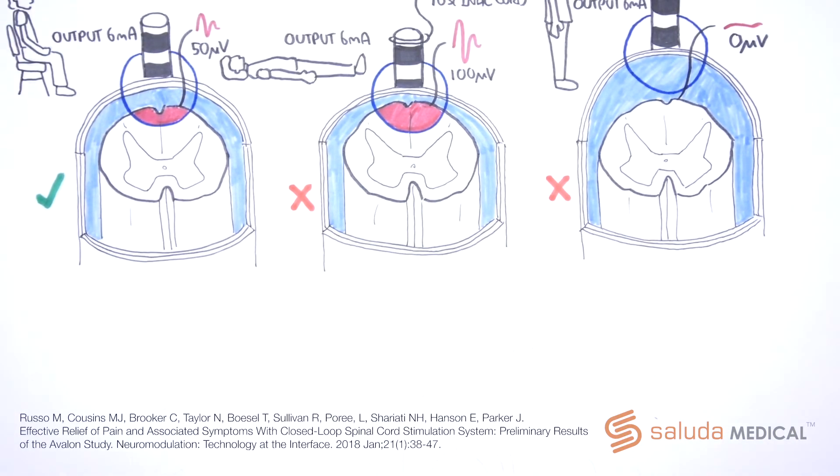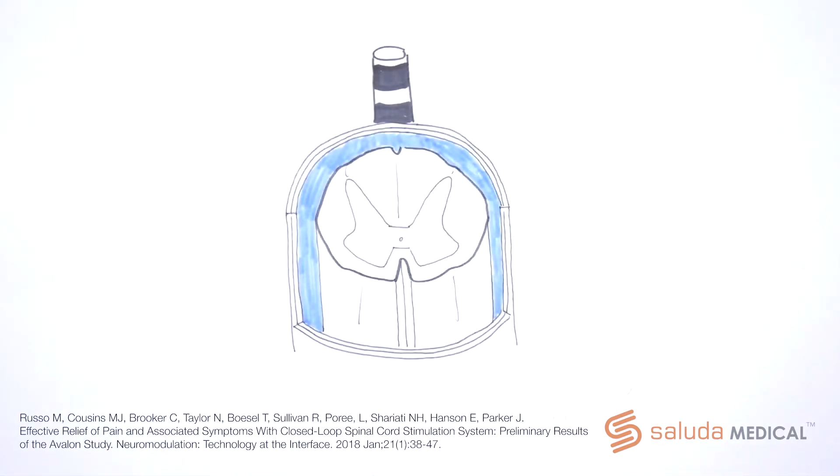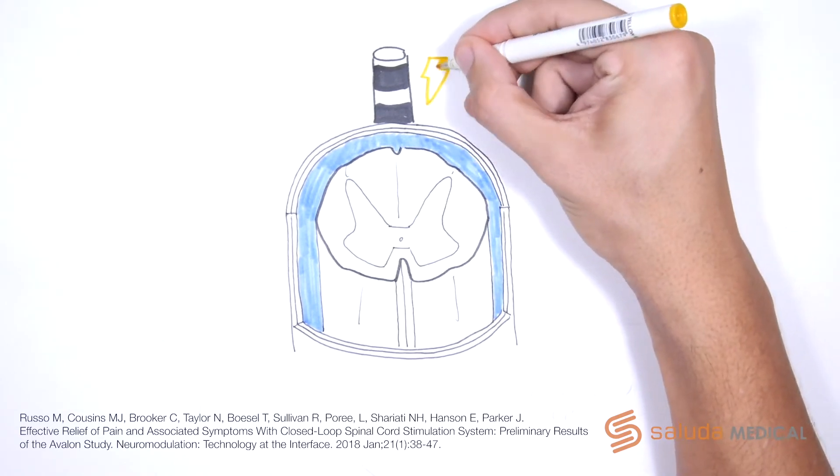The Evoke Closed Loop Spinal Cord Stimulation System addresses this problem by using the ECAP amplitude to control the strength of the stimulation amplitude, ensuring the activating region is more consistent. This means a similar number of fibers are activated, and there is less variation in activation over time.